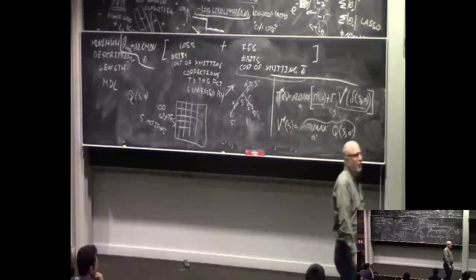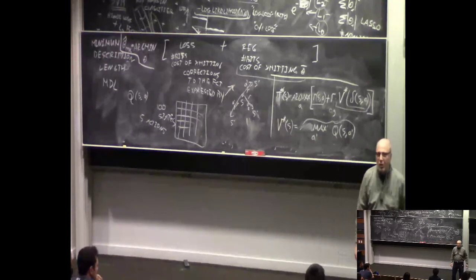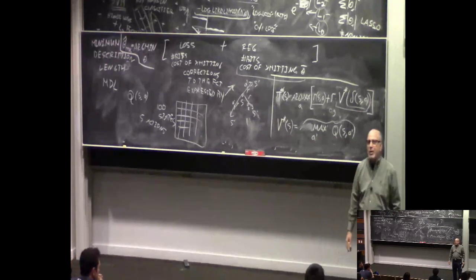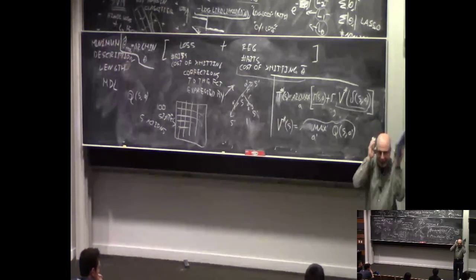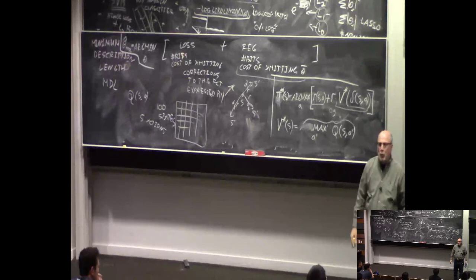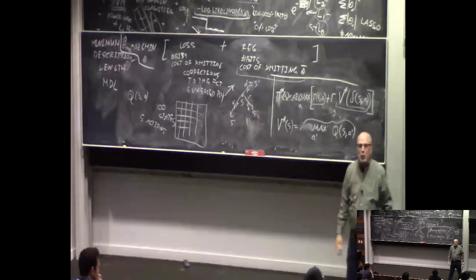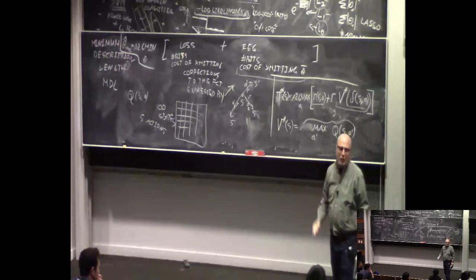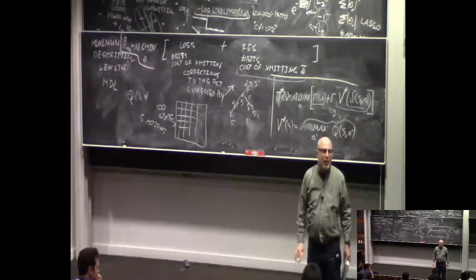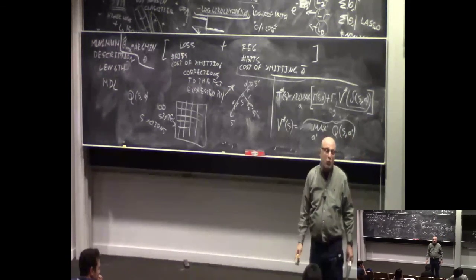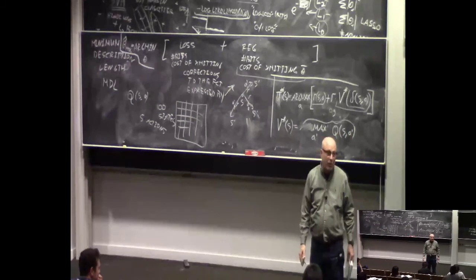There are proofs that if you visit all states and take all actions infinitely often, you will eventually converge to the right Q values. But that proof was worth nothing practically — anything beyond two or three states, there wasn't enough time to converge. That was the state of reinforcement learning until five years ago.